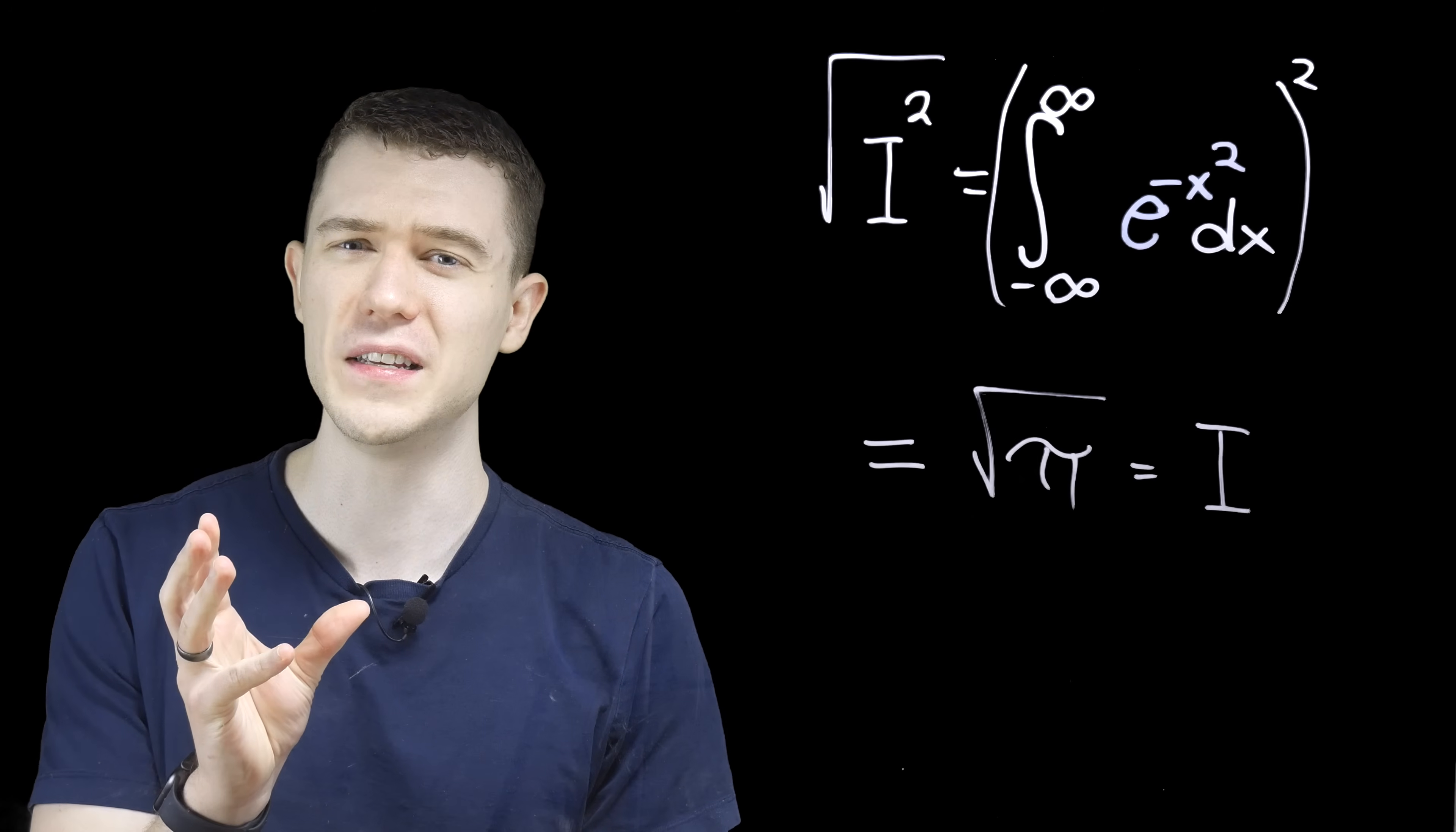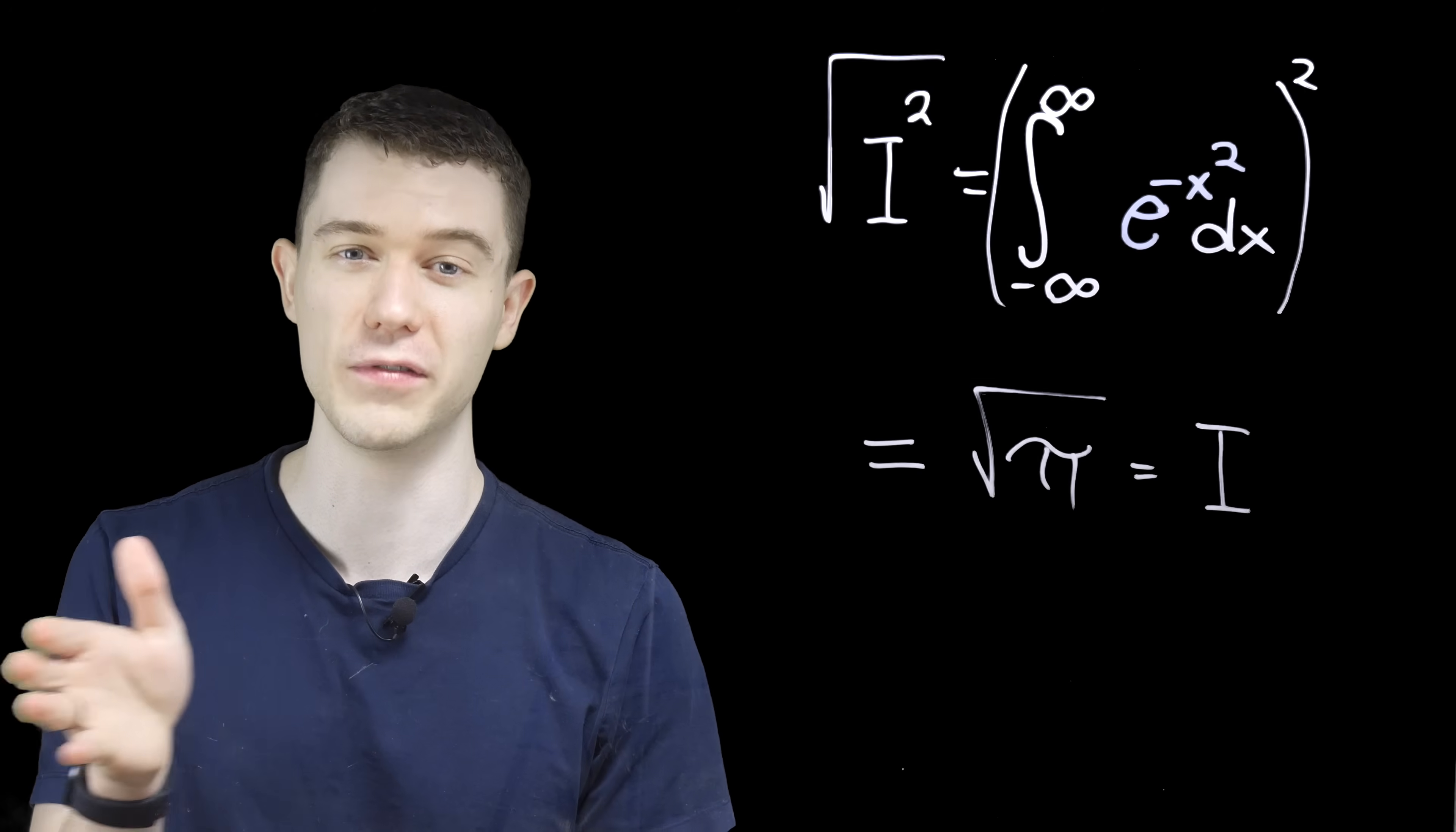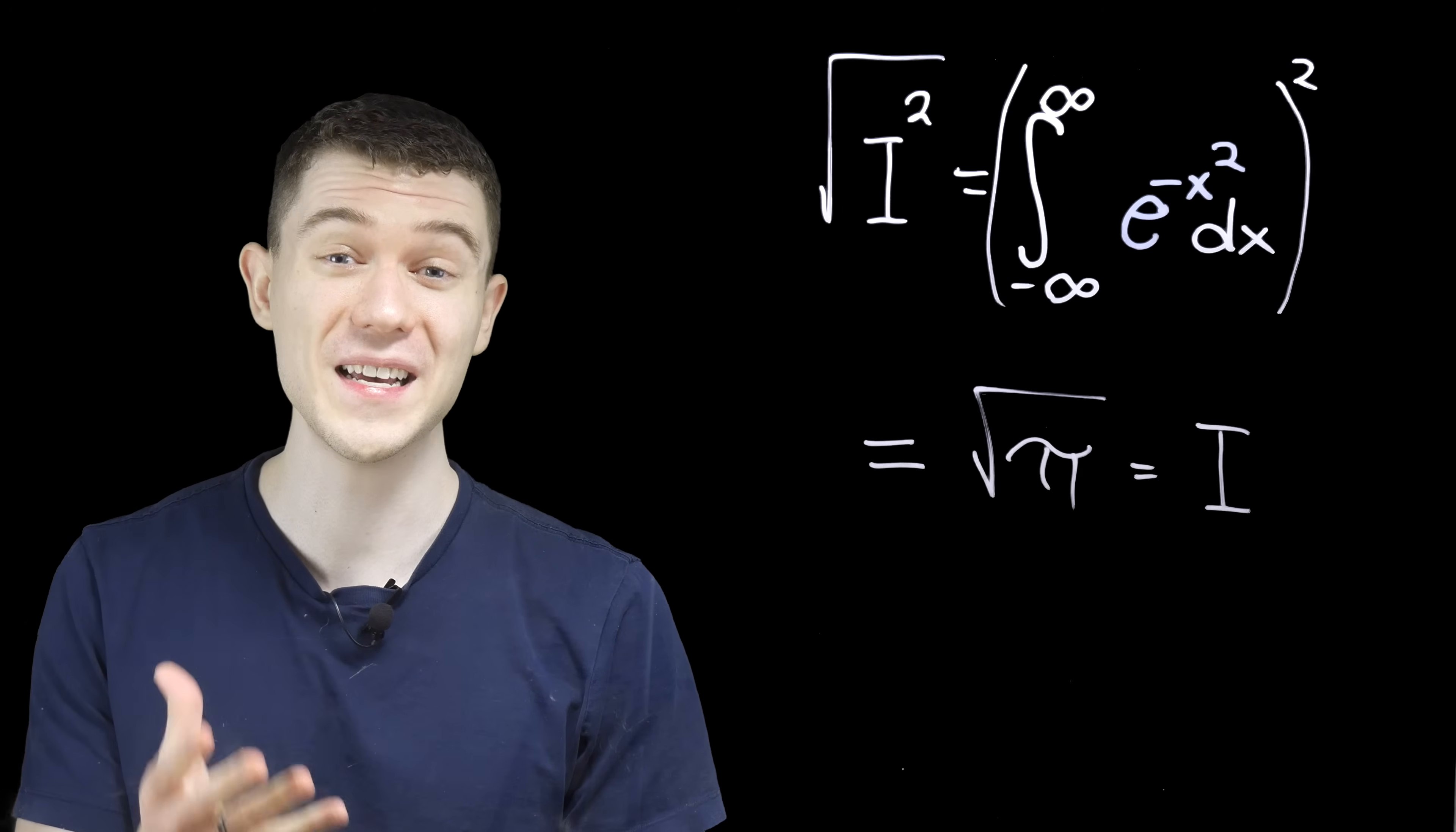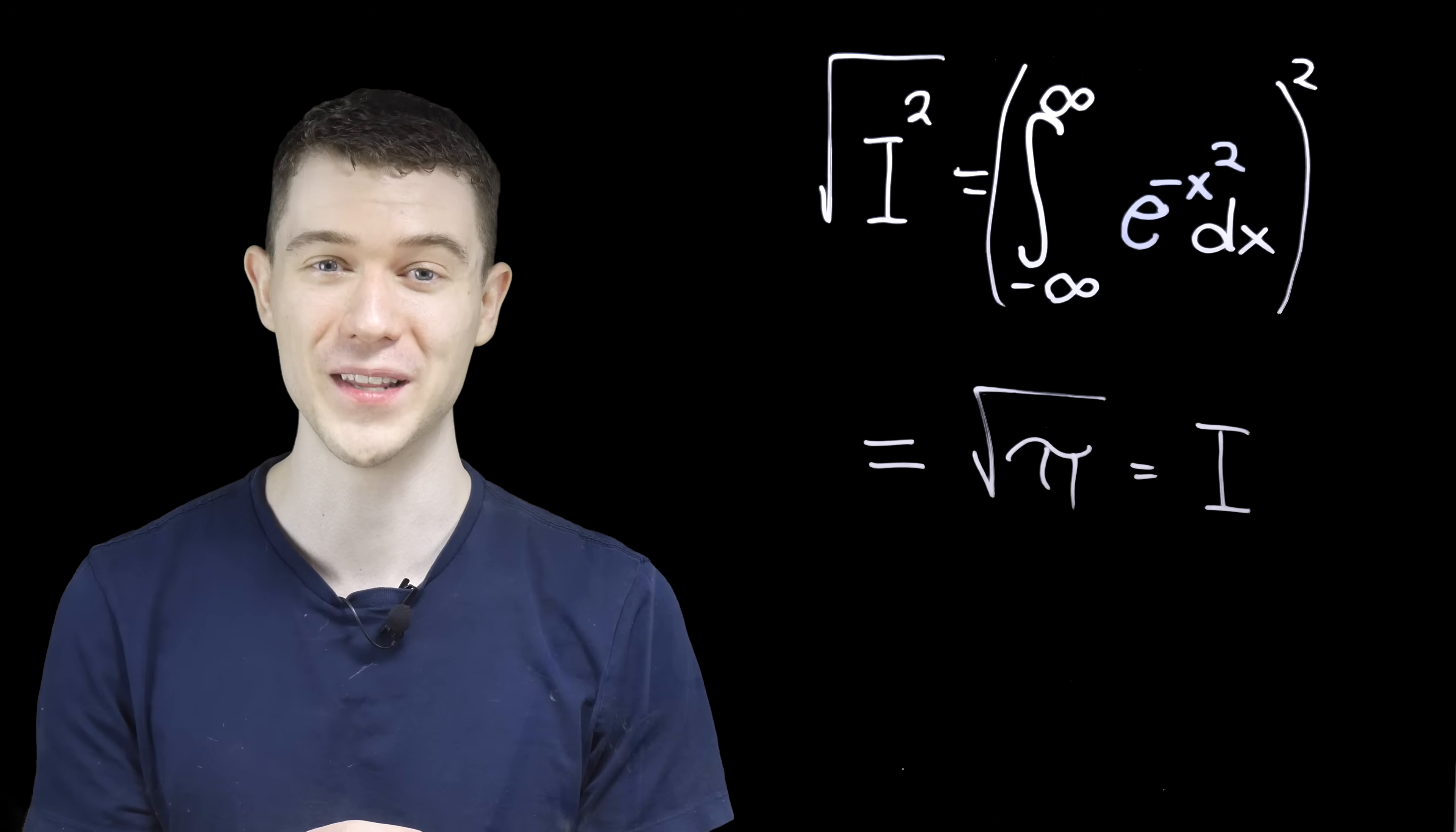And this is where, if you've ever seen these normal curves and the formulas for them, you'll see a square root of pi or a square root of two pi when we kind of adjust for some things. A pretty amazing result from a pretty amazing integral. Now, if you want to see another amazing thing, click the video on the screen right here. It has some info in there I think you'll enjoy. I'll see you in that one.